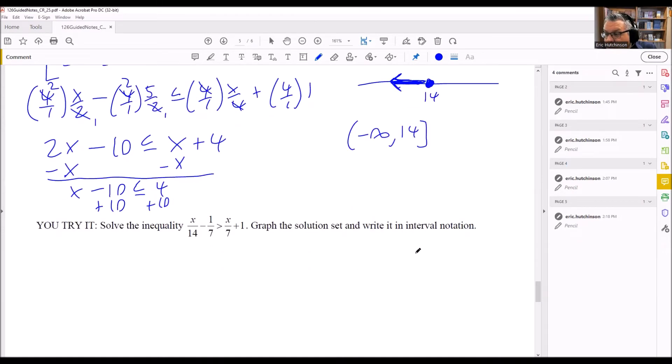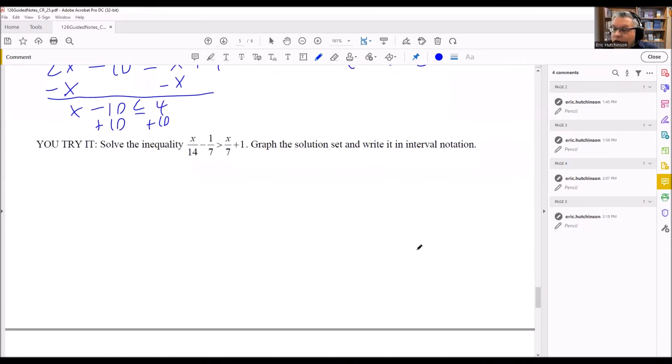Let's do the next one in a similar way. The common denominator is going to be 14, because 14 is a factor of itself and 7 divides into 14. So we're going to multiply the entire equation by 14. I'm putting 14/1 in front of all these. So I have x/14, and minus 14/1 times 1/7 greater than 14/1 times x/7 plus 14/1 times 1.